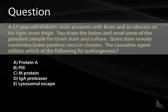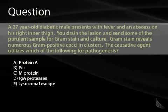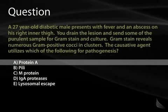Practice question: A 27-year-old diabetic male presents with a fever and abscess on his right inner thigh. Gram stain of the drained lesion reveals gram-positive cocci in clusters. The causative agent uses which pathogenic mechanism? The gram stain tells us it's Staphylococcus aureus — not a streptococcus. We know that protein A is the virulence factor frequently used by Staph aureus. That's what we need to answer this question.